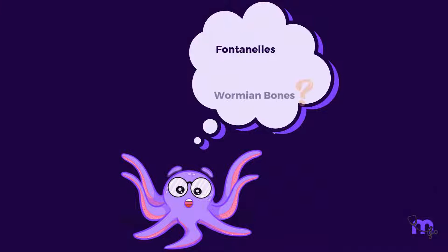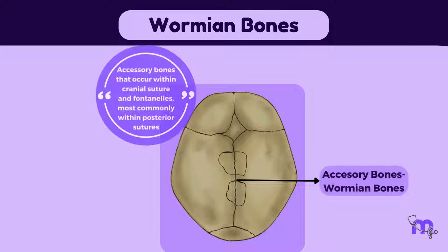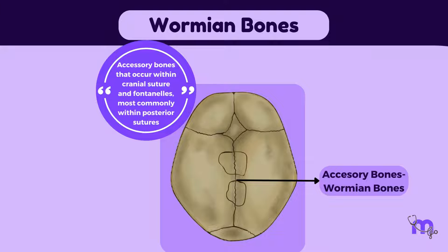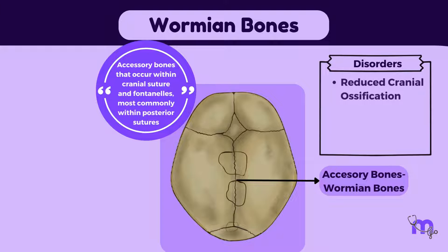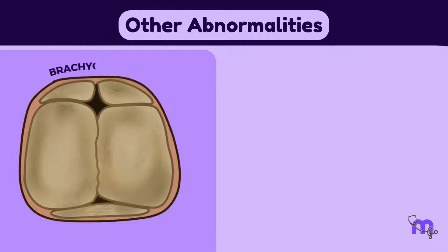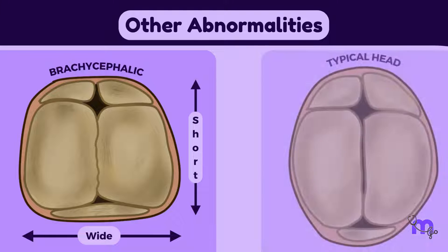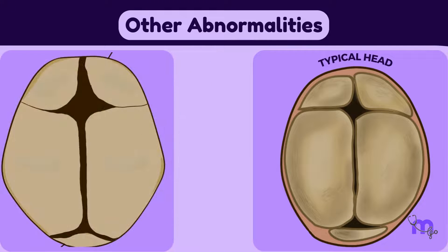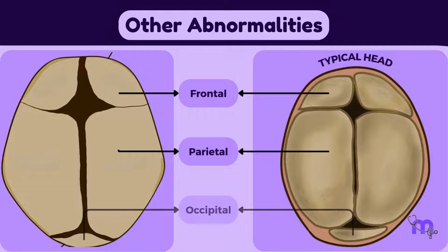Wormian bones are accessory bones that occur within cranial sutures and fontanels, most commonly within the posterior sutures. They occur more frequently in disorders that have reduced cranial ossification, hypotonia, or decreased movement, thereby resulting in deformational brachycephaly. The head shape tends to be brachycephalic, meaning it appears wider and shorter compared to typical head shapes. They present with prominent frontal, parietal, and occipital bones and give the head a distinct appearance.